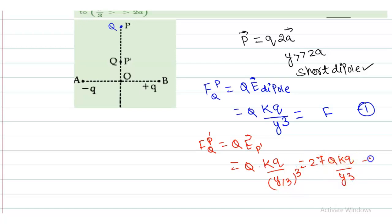This is equation two. So I can write it also as 27 times F. So this is our answer. The force on Q at point P' will become 27 times F. This is our correct answer. I hope you have got your answer. Thank you.